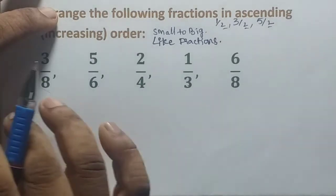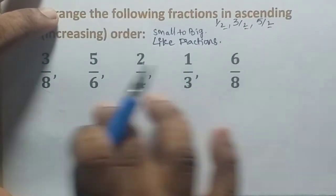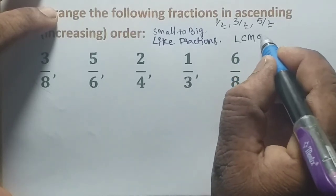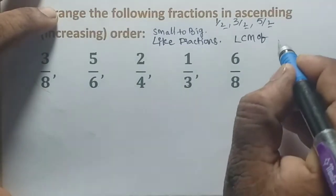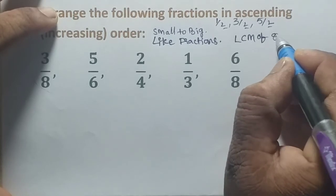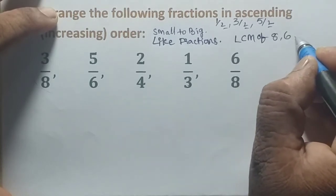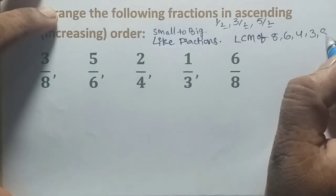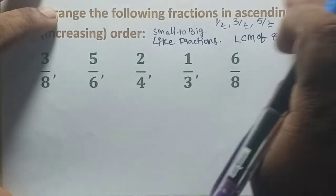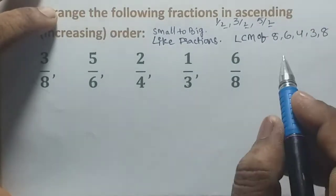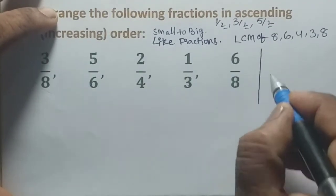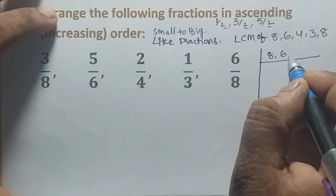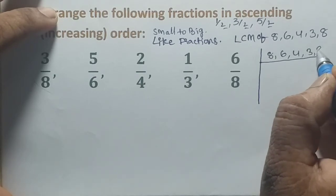First of all, we have to take the LCM of the denominators. What are the denominators here? They are 8, 6, 4, 3, and 8. These are the denominators. Let us find out the LCM of 8, 6, 4, 3, and 8.